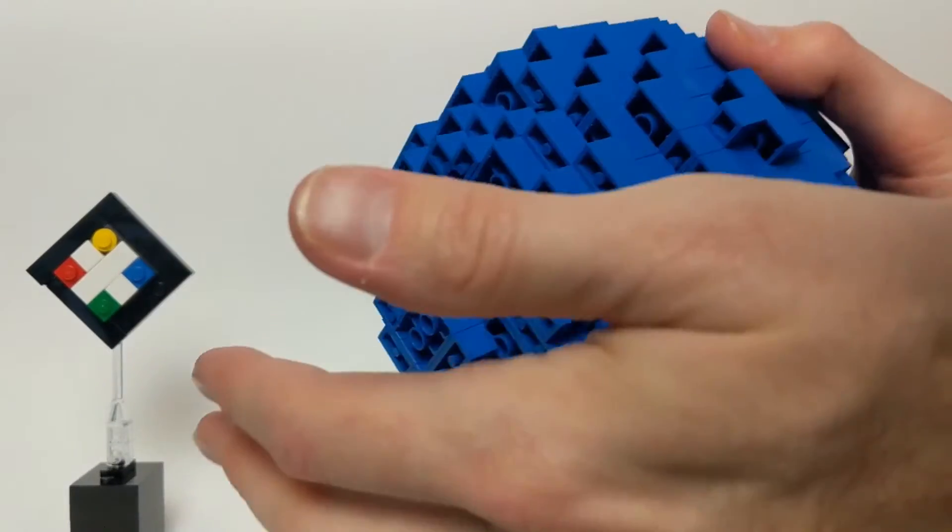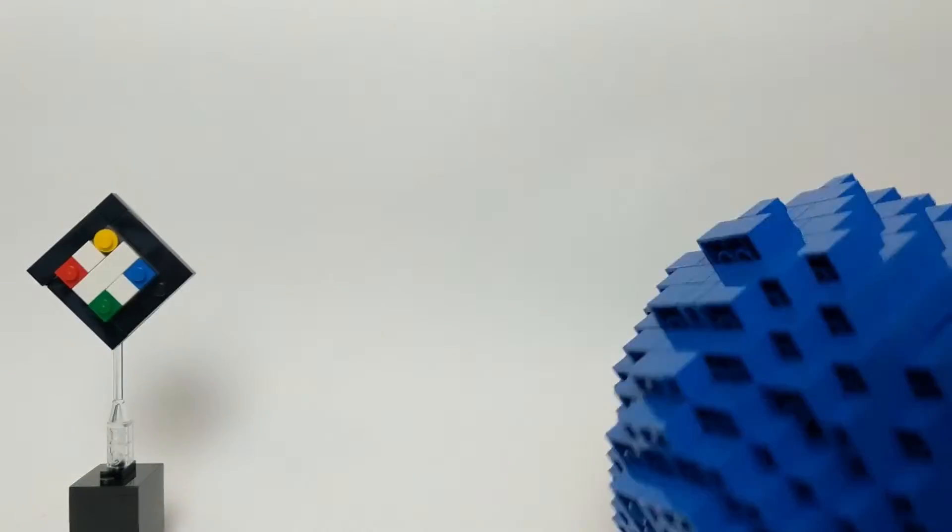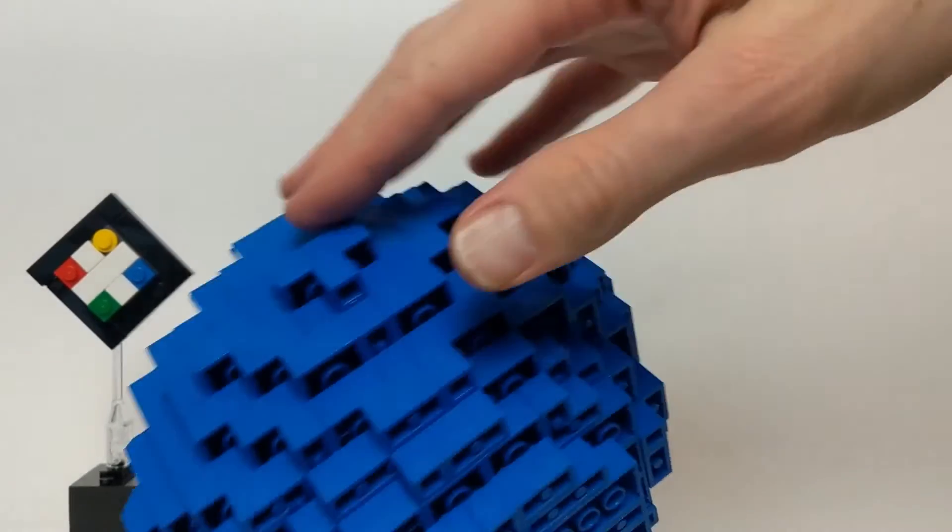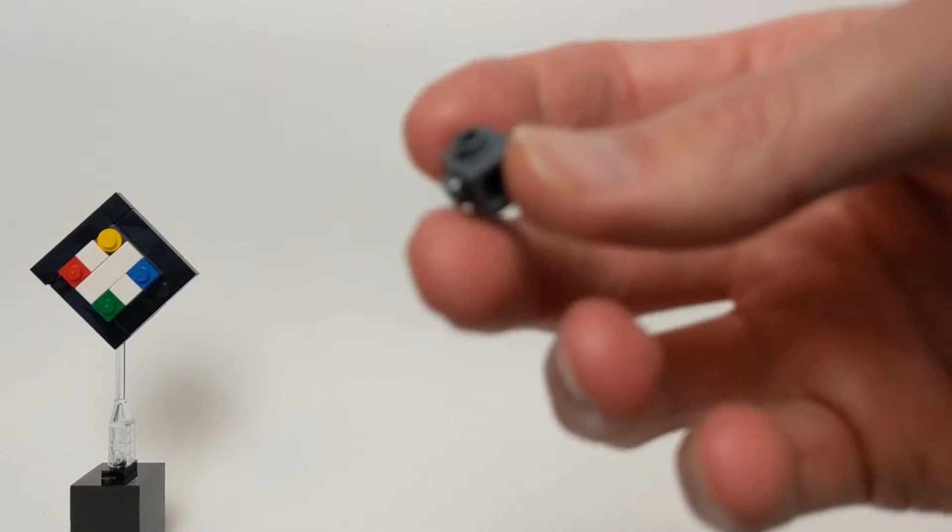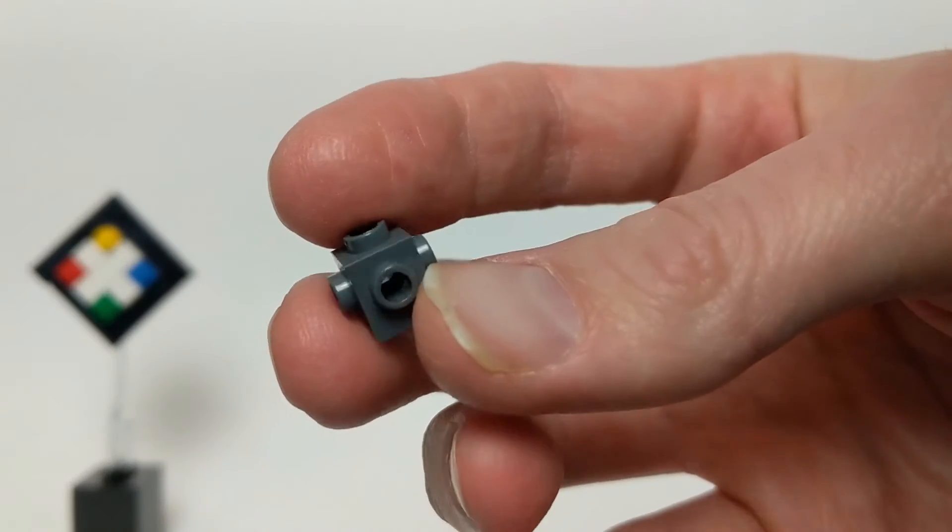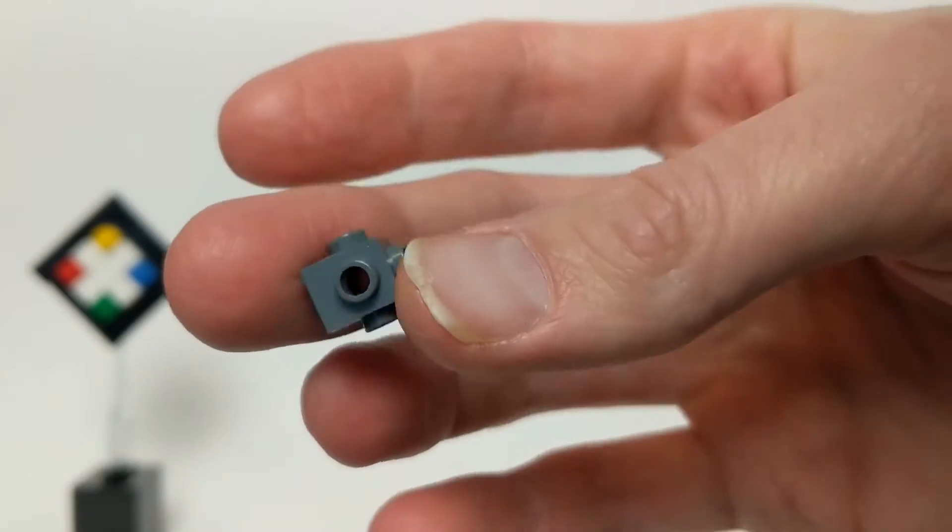And once you squish them back together, they're actually really sturdy and can even roll around. Speaking of rolling, let's get rolling on taking a look at a different kind of technique that you can use to create spheres.